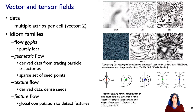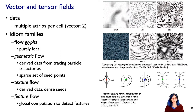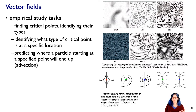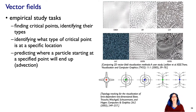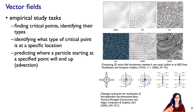Finally, instead of waiting for our eyes to detect features, we could directly compute so-called topological features of the fluid flow — things like sources, sinks, or saddle points. We could compute those and then use any of these other methods to show the explicitly computed features. Some of the tasks people try to do — from empirical studies of vector fields — include finding critical points, identifying what kind of critical point is at some location (saddle, sink, or source), and advection: predicting where a particle released at a given spot would end up given the fluid flow shown.